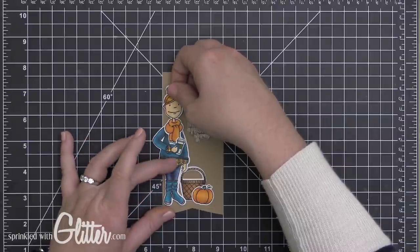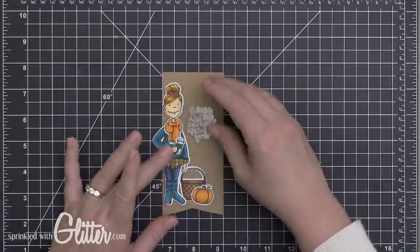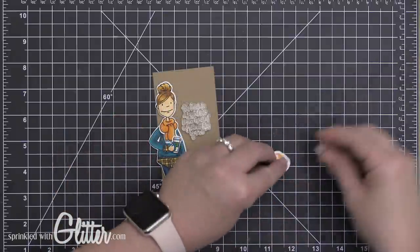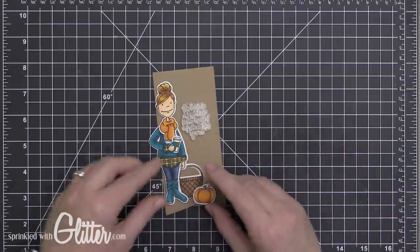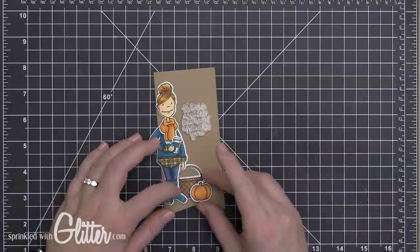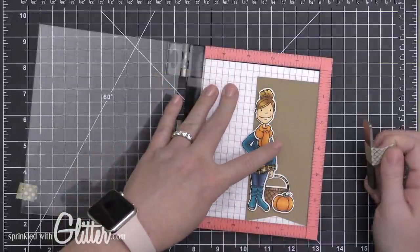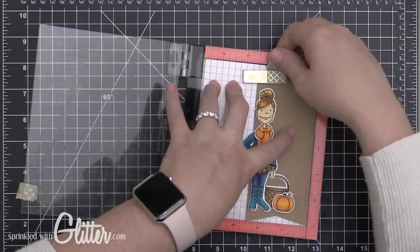Now I'm just going to adhere her onto a little panel of some embossed wood grain cardstock. This is a craft-colored cardstock with a wood grain embossing on it, just sticking with that fall feel and color theme. I have her basket adhered down there and I'm also going to adhere this little pumpkin in front using a little foam adhesive.